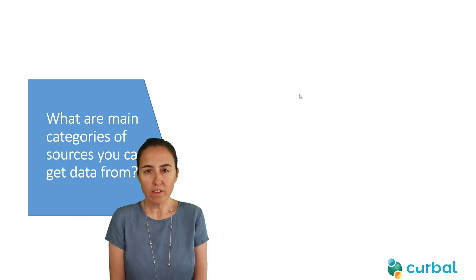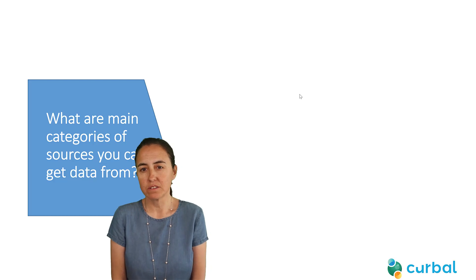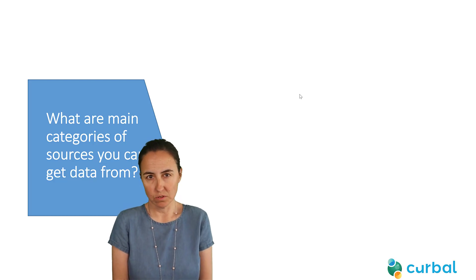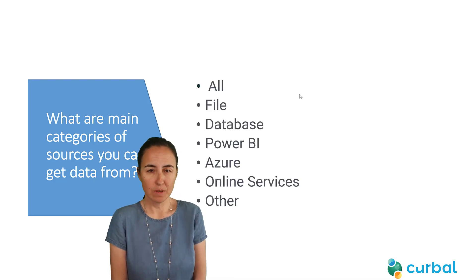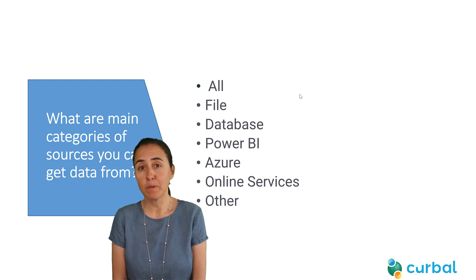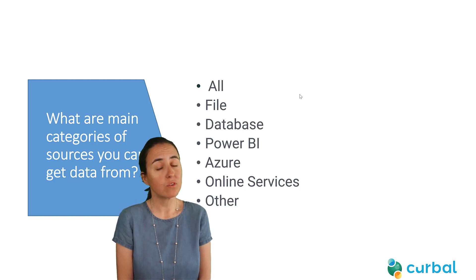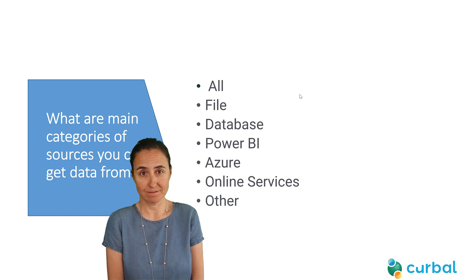What are the main categories of sources you can get data from? The main categories are: file, database, Power BI, Azure, online services, and other.